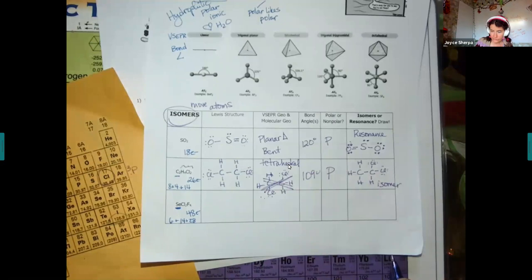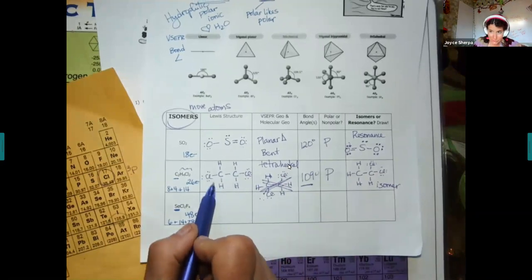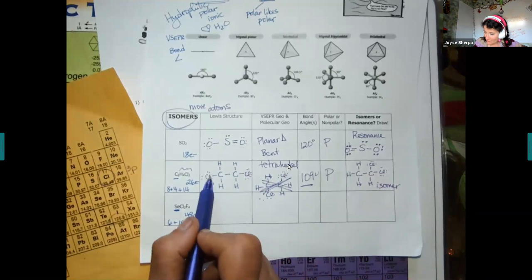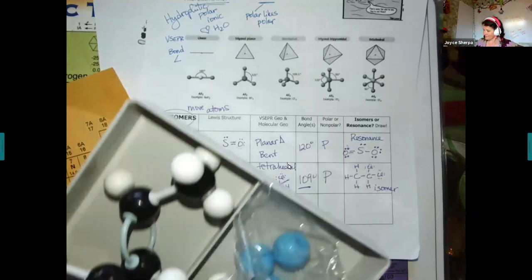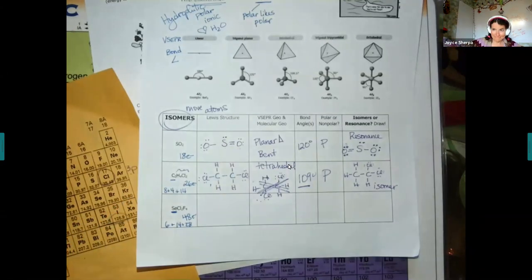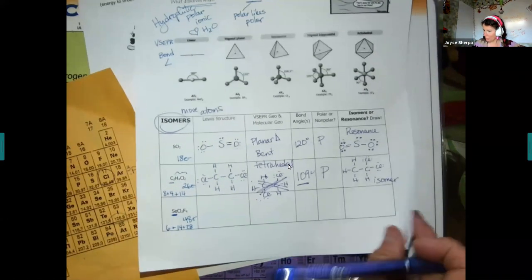Chlorines always pull, so this molecule is polar. It is tetrahedral at 109 degrees. I drew a two-dimensional picture, but these chlorines are not actually across from each other. I'll make the molecule on Tuesday to show it better. The biggest thing to realize is that in a tetrahedral, all four positions are exactly the same.